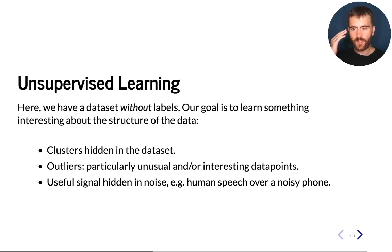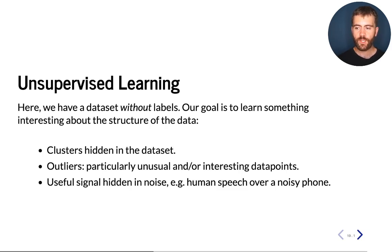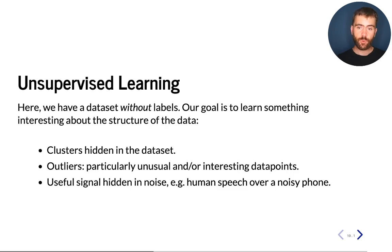Supervised learning is not the only type of machine learning. Another important type we're going to see in this class is called unsupervised learning. Here, we have a dataset that doesn't have any labels or human annotations, and our goal is to learn something interesting about the structure in this data. For example, we might see that the dataset contains several clusters — different groups of points that are more similar to each other.